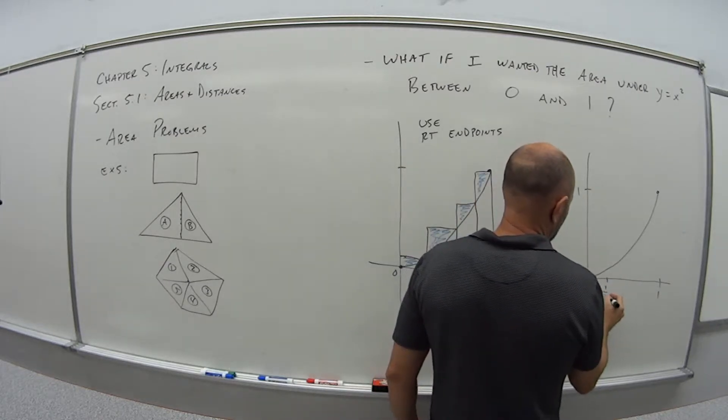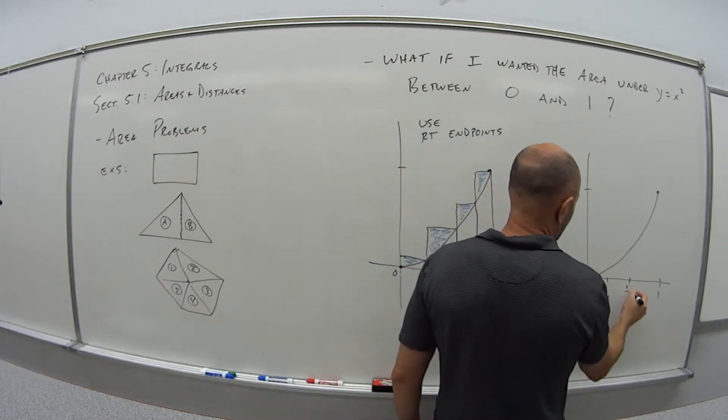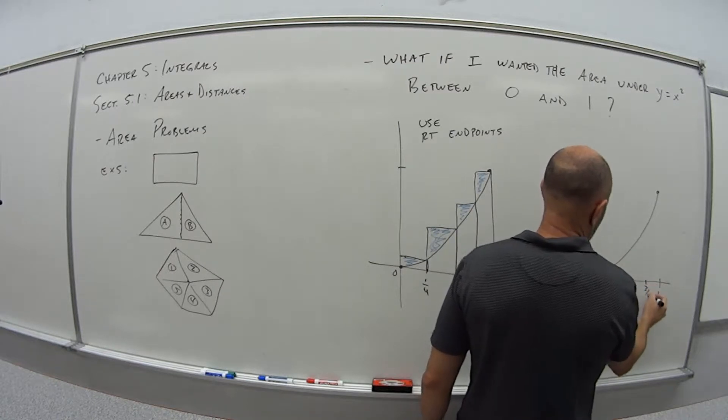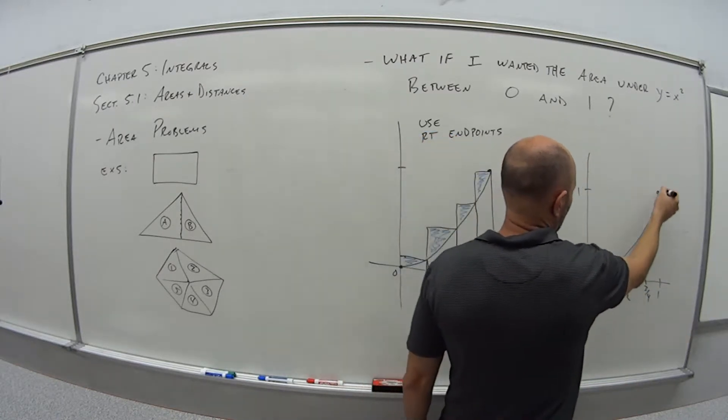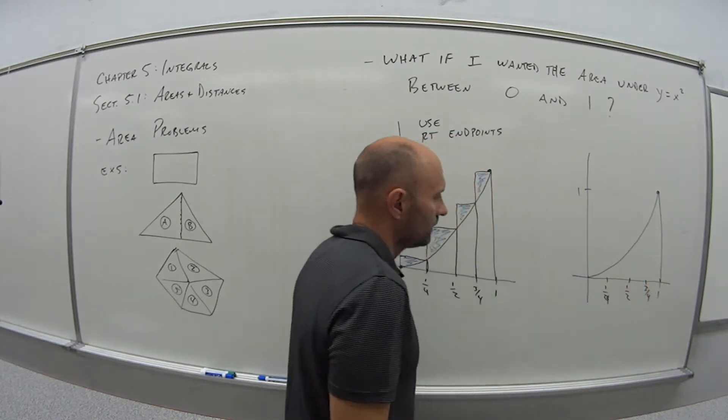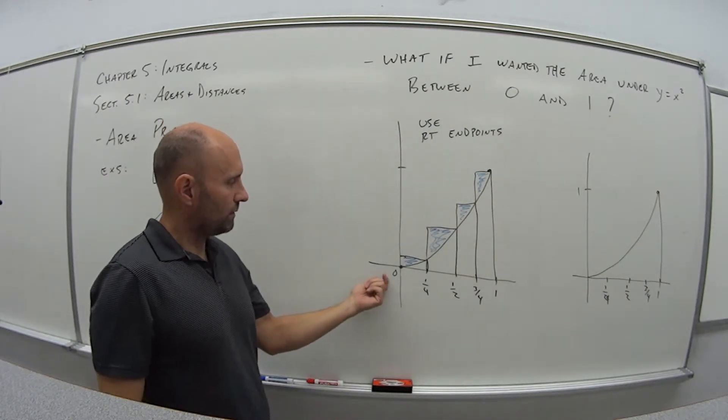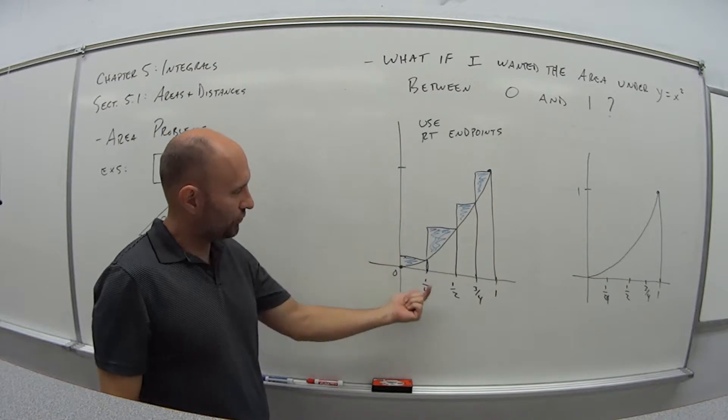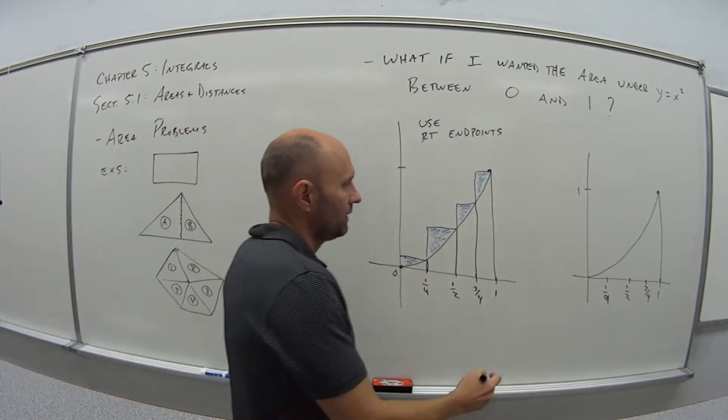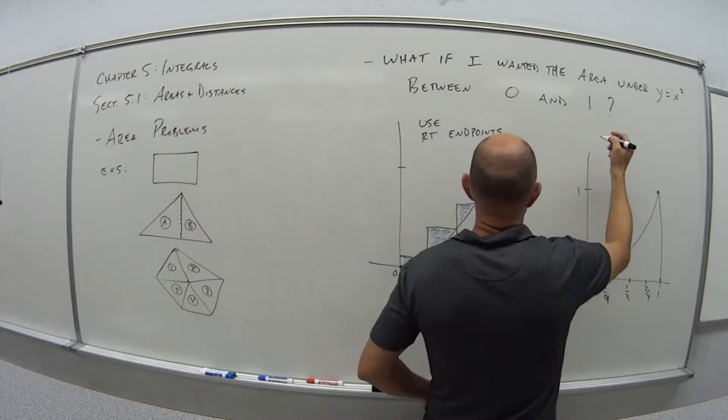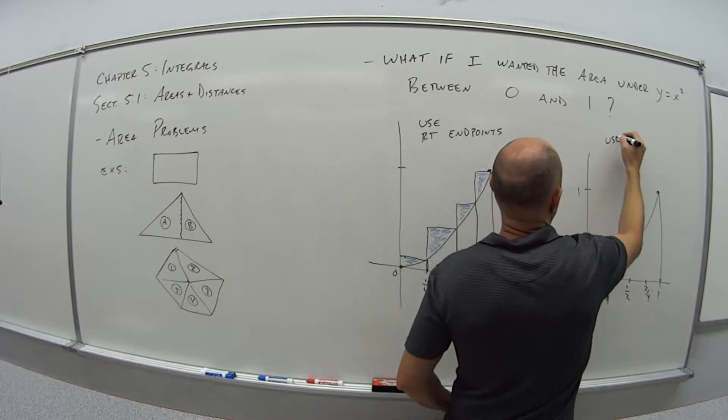If I did it with, whoops, so 1 fourth, 1 half, 3 fourths, divided in the same number of sections. So, now, if I use the left endpoint, go up to where the function is, draw my rectangle there. So, on this one, so that was using right endpoints, now if I use the left endpoints.